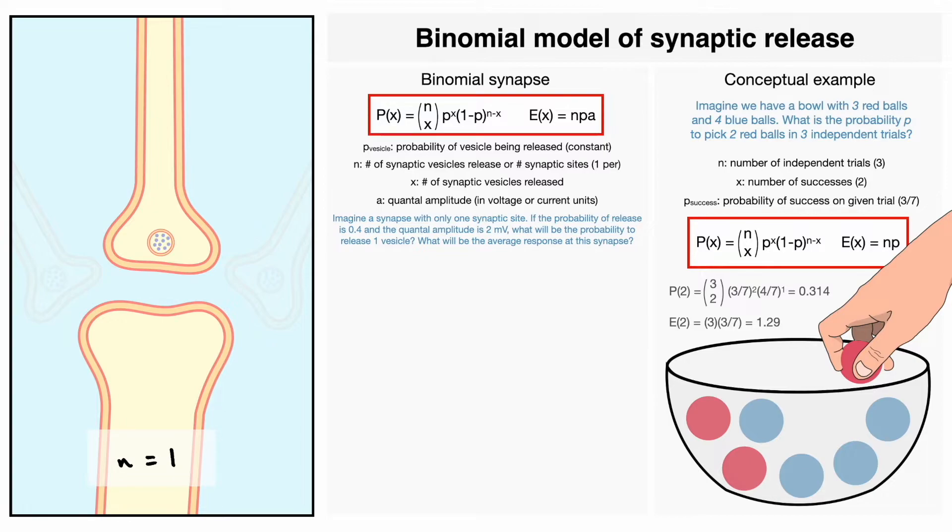In this problem, since we only have one site, well, the probability to release 1 vesicle will be 0.4 accordingly. For the average response, we can use our equation of the expected value and determine that the average response would be about 0.8 millivolts. This example was rather straightforward, so let's see another one that might be a bit more challenging.